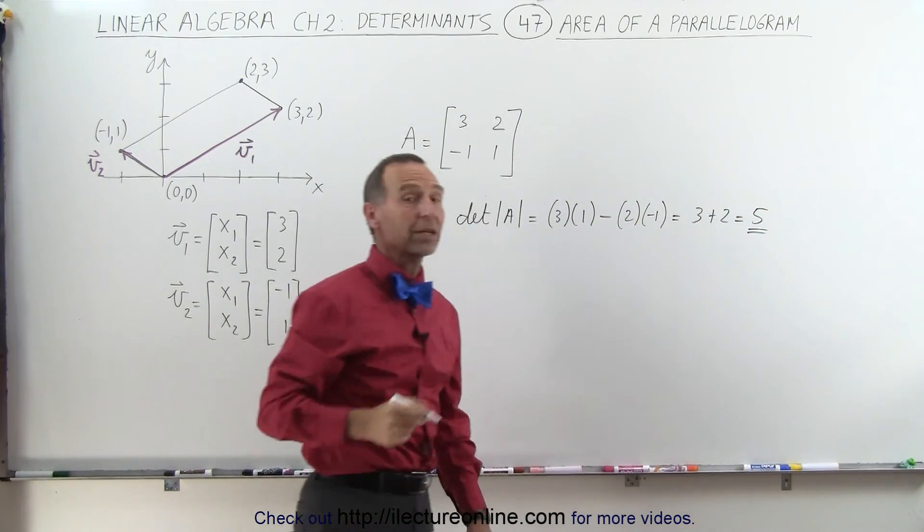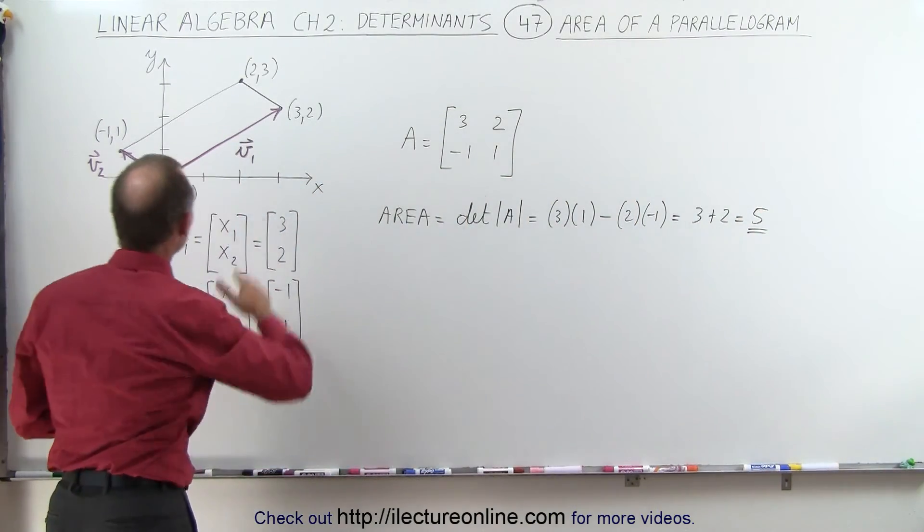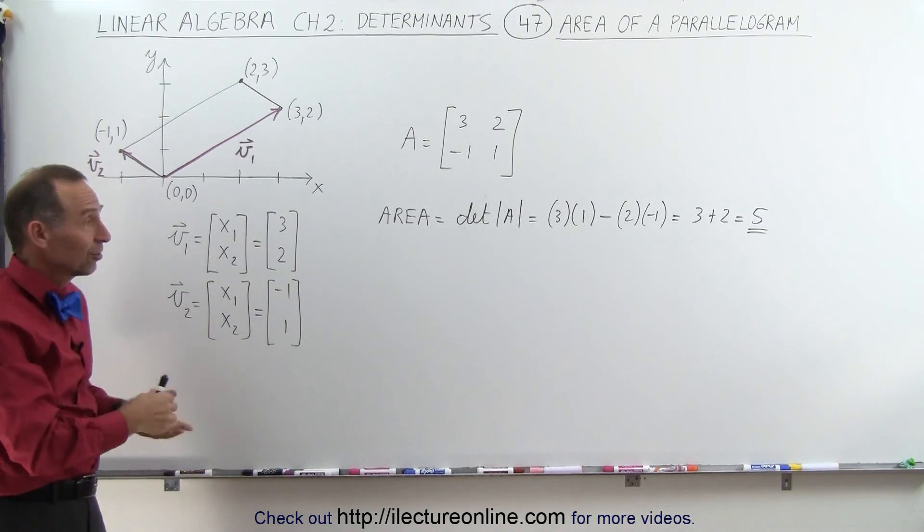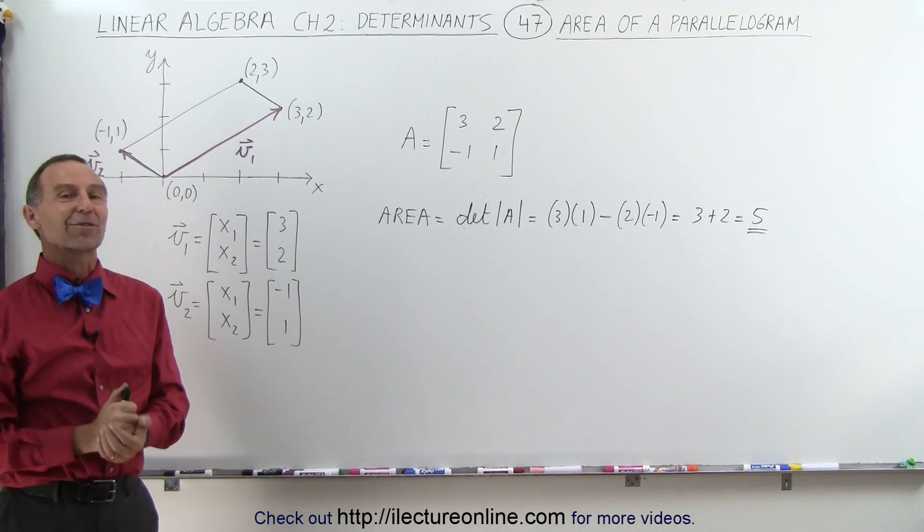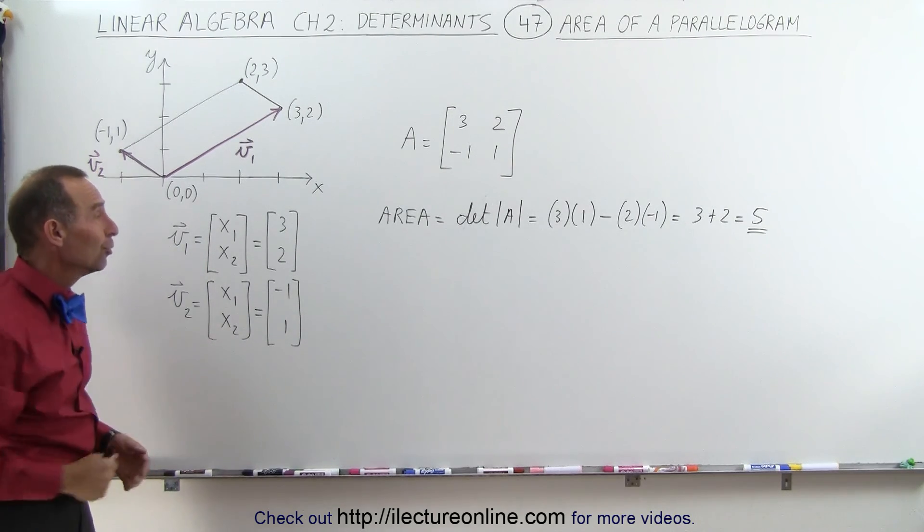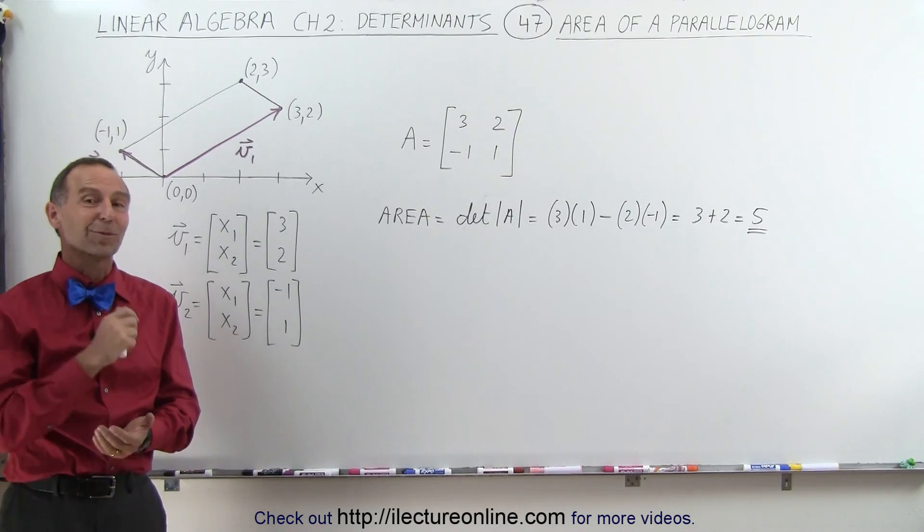That means in this particular case the area of this parallelogram is equal to 5. It's a pretty slick method, and it's very easy to execute. And that's how we find the area of a parallelogram using matrices and determinants.